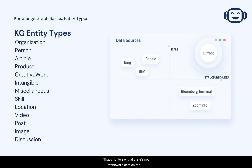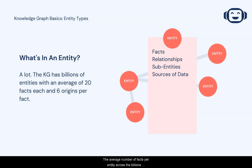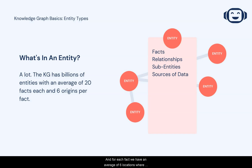That's not to say that there's not worthwhile data on the other entity types. At a high level, you can think of entities as a collection of facts. The average number of facts per entity across the billions of entities we have is slightly over 20, and for each fact we have an average of six locations where our AI has inferred or found this information, which helps to provide data provenance.